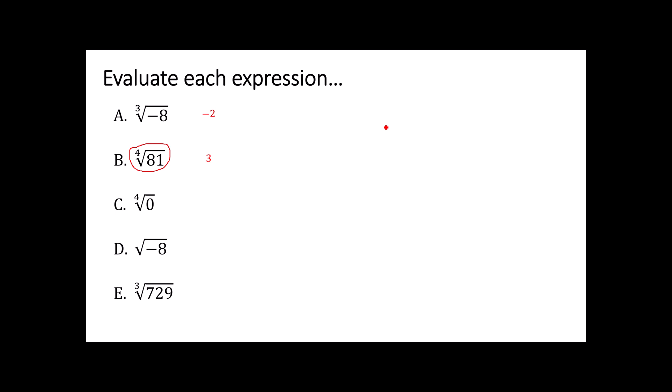The 4th root of 81 is even, so it's going to have two possible solutions, but the way this is written only asks me for the positive one, a 3. C is an interesting problem. What times itself times itself times itself is a 0? Well, that's just a 0. And then D says what times itself equals negative 8? Well, that's impossible. Anything times itself would always come out as either 0 or a positive number. The last one is the cube root of 729. What times itself times itself again is 729? 9.